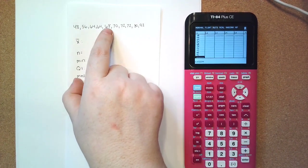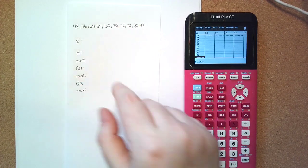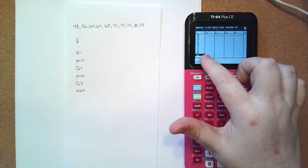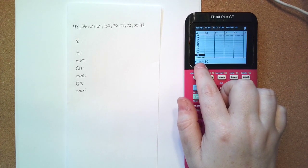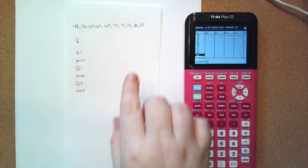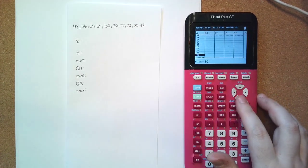So we have 1, 2, 3, 4, 5, 6, 7, 8, 9, 10 data points, and if we look at our last number 92 it'll say L1 of 10, so that's list 1 of, so number 10 should be number 92, and that's what we had. So we have our list in there.